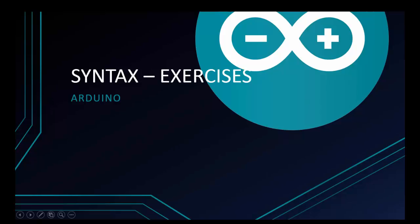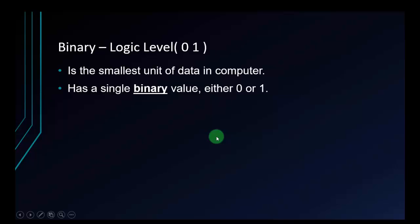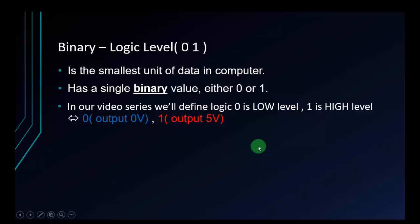Welcome to Programming Knowledge. Today I'm going to talk about syntax in Arduino and do some exercises to get used to Arduino. First, talking about embedded systems, we have to know about binary, also known as logic level. Binary is the smallest unit of data in a computer, with a single value of either zero or one. By these digits, we can communicate with microcontrollers and almost any hardware. In our video series, logic zero is defined as low level and logic one as high level.